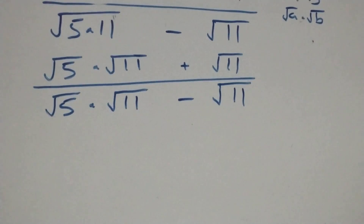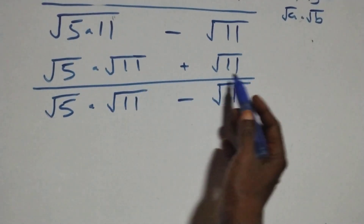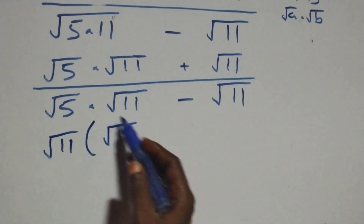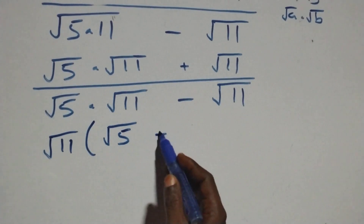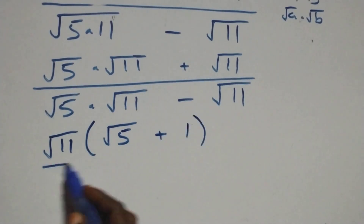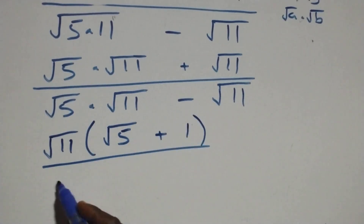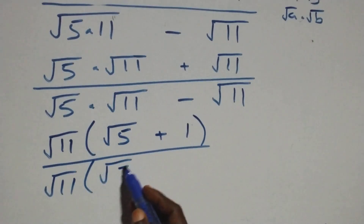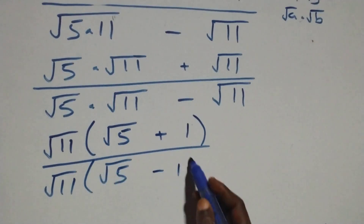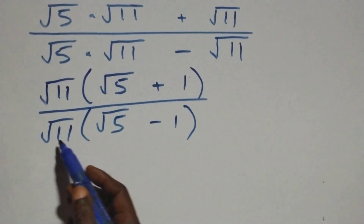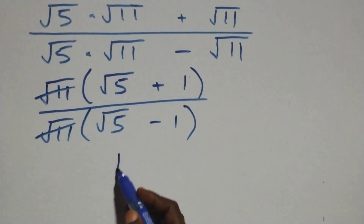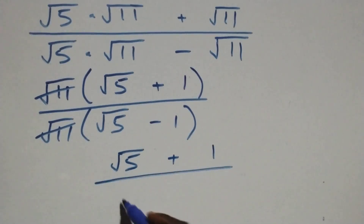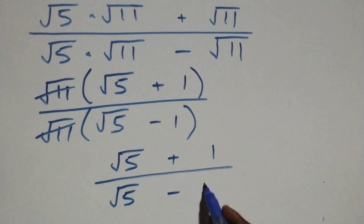From here, root eleven is common, so we factor it out. We have root eleven into bracket: root five plus one, divided by root eleven into bracket: root five minus one. Then root eleven cancels with each other, and we have root five plus one divided by root five minus one.